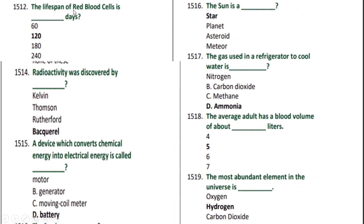The lifespan of red blood cells is — correct option B — 120 days. Radioactivity was discovered by — correct option D — Becquerel. A device which converts chemical energy into electrical energy is called — correct option D — a battery. The sun is a — correct option A — star. The gas used in a refrigerator to cool is — correct option D — ammonia.